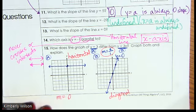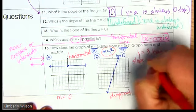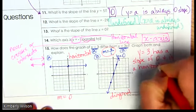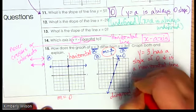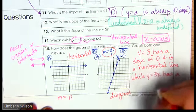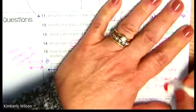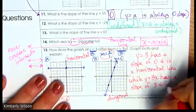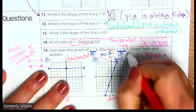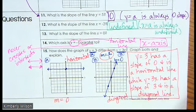When it says explain, that means we write a sentence. So we could say: y equals 3 has a slope of zero and is a horizontal line, while y equals 3x has a slope of 3 and is a diagonal line. Finish the notes and work on the homework. Have a great day.